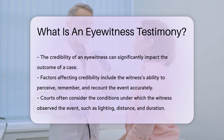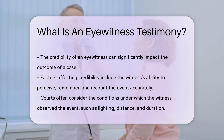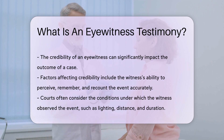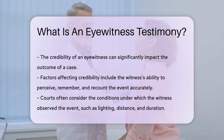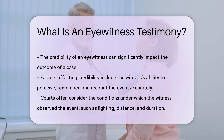Courts often consider the conditions under which the witness observed the event. This includes the lighting, distance, and duration of the event. Emotional state and stress levels at the time of witnessing can also affect accuracy. Memory can be influenced by time, leading to potential inaccuracies.